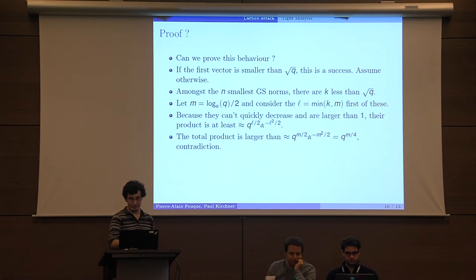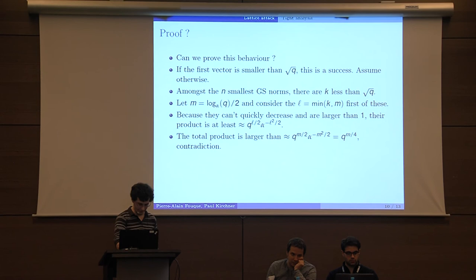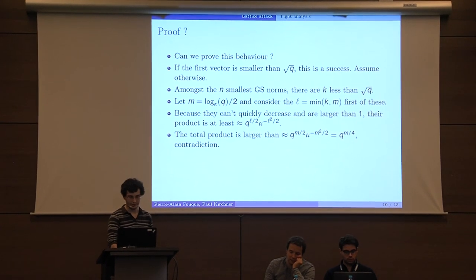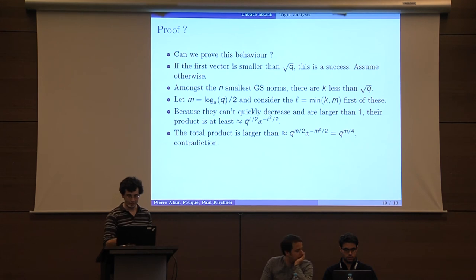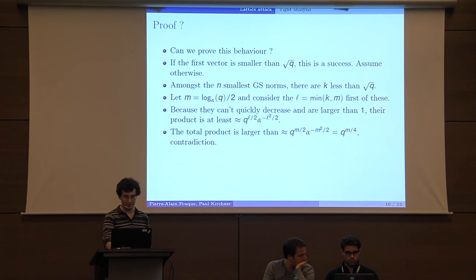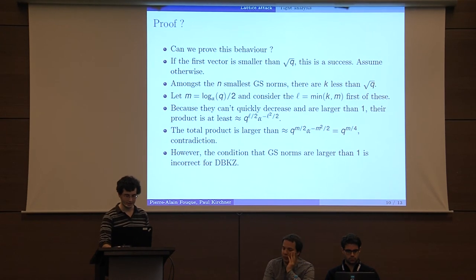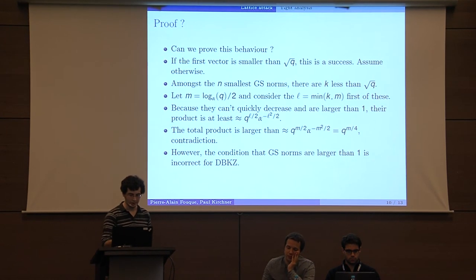The total product is larger than this because all the Gram-Schmidt norms are larger than 1. This is a property due to LLL, but then we have a contradiction with our property and the product of the N smallest vectors of the sublattice with a small volume.